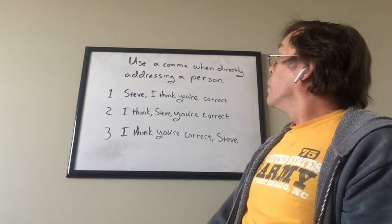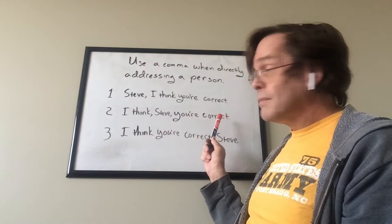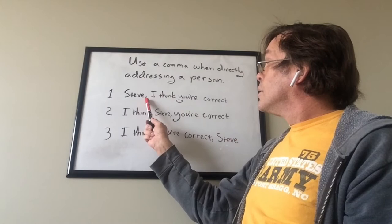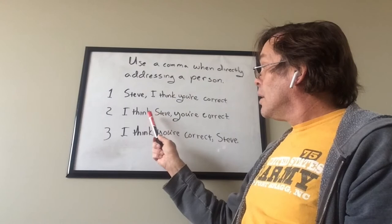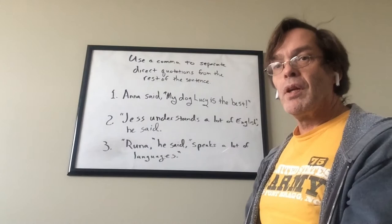You also use commas when directly addressing a person. For example: 'Steve, I think you're correct' — there's a comma after the name. 'I think, Steve, you're correct' — there's a comma before and after the name. 'I think you're correct, Steve' — there's a comma before the name in this third example.